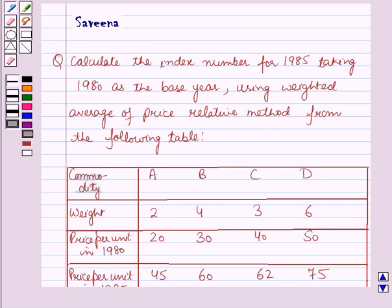Hello and welcome to the session. In this session we will discuss the question which says: calculate the index number for 1985 taking 1980 as the base year using the weighted average of price relative method from the following table.